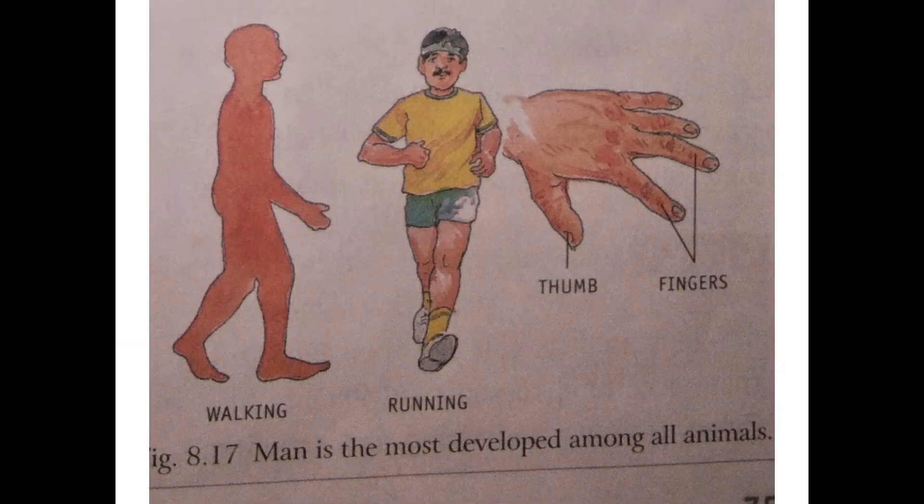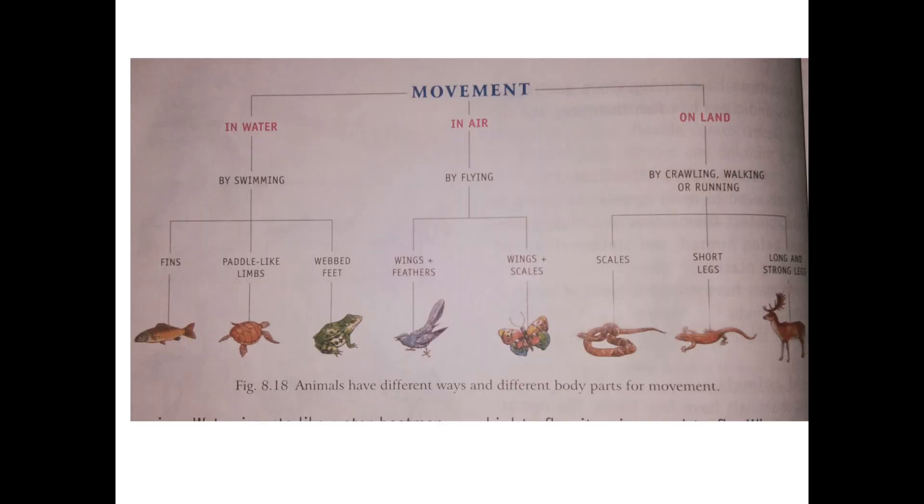In the case of humans, we have one pair of hind limbs and one pair of forelimbs. With hind limbs — our legs — we can walk and run. We have a backbone that allows us to stand erect. Our hands have a thumb opposite to the fingers, so with thumb and fingers we can hold objects and do many kinds of work. Humans are the most developed among all animals.